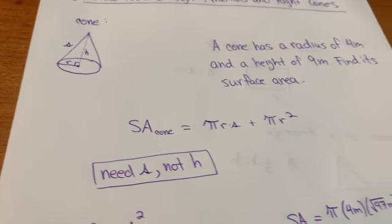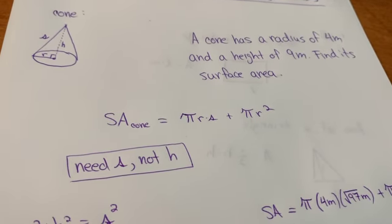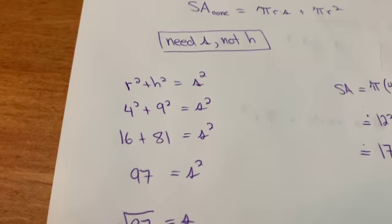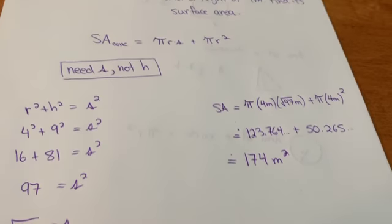Do we know what a cone looks like? Do we know the difference between height and slant height? And then how to find the slant height so that we can use it in our formula?